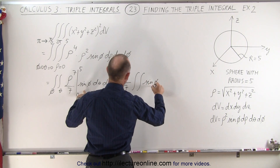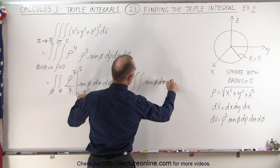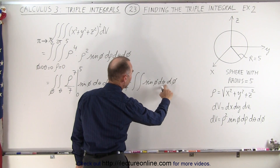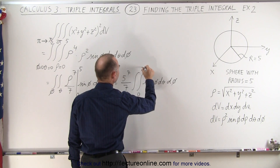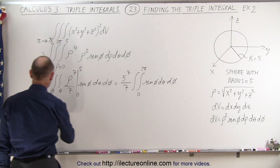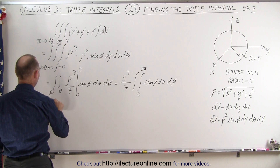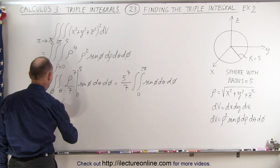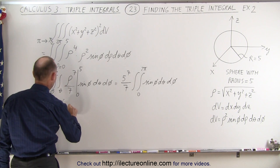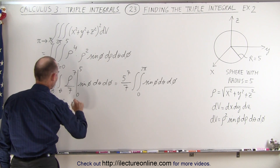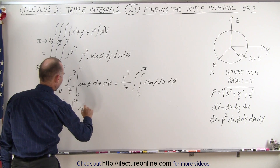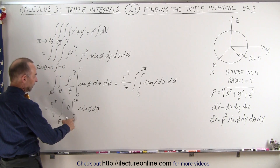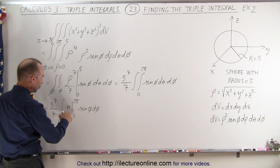What we have remaining is the double integral of the sine of phi d theta d phi. The next integral is over the angle theta from 0 to 2 pi. This becomes 5 to the seventh power divided by 7 times the single integral over phi, with theta evaluated from 0 to 2 pi, leaving the sine of phi d phi. Plugging in the limits, 0 gives nothing, giving 2 pi.